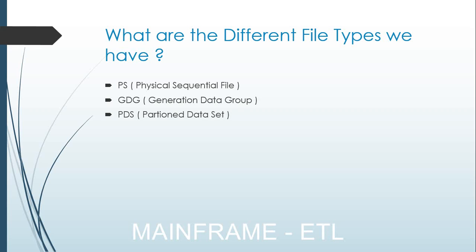PDS is a partition data set — this is where we store a record structure. The actual data stored in a PS file or GDG file is raw data. When you open that file, you cannot see the structure of each record. To interpret it, you need to design a structure, and that structure is designed in a PDS.